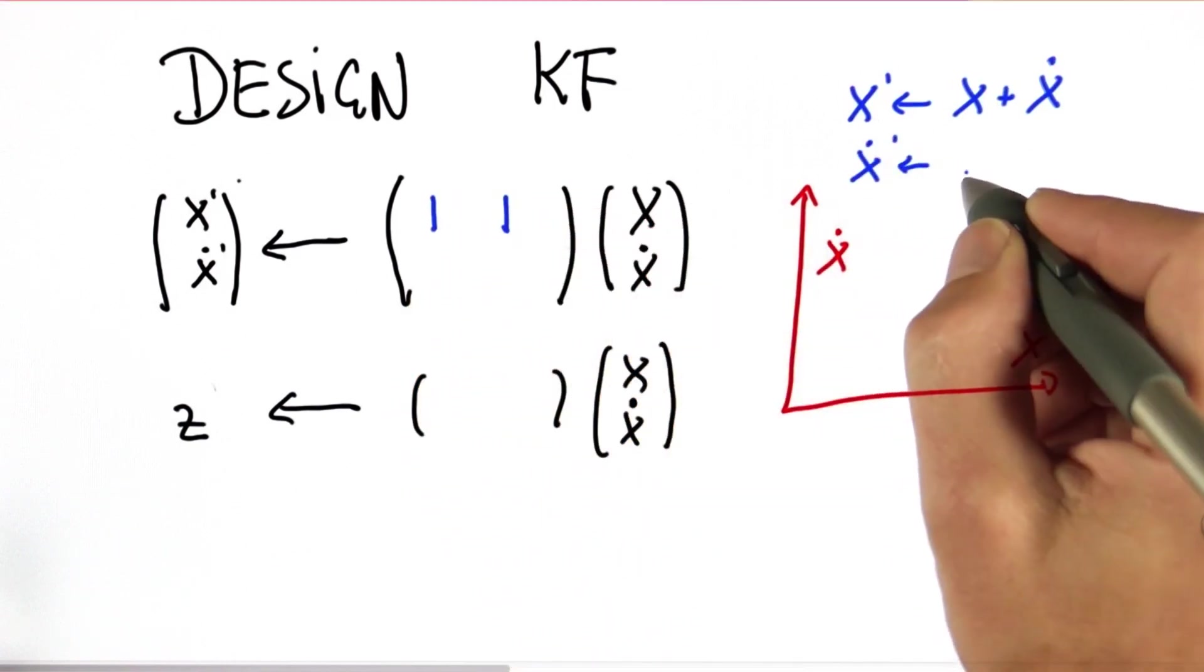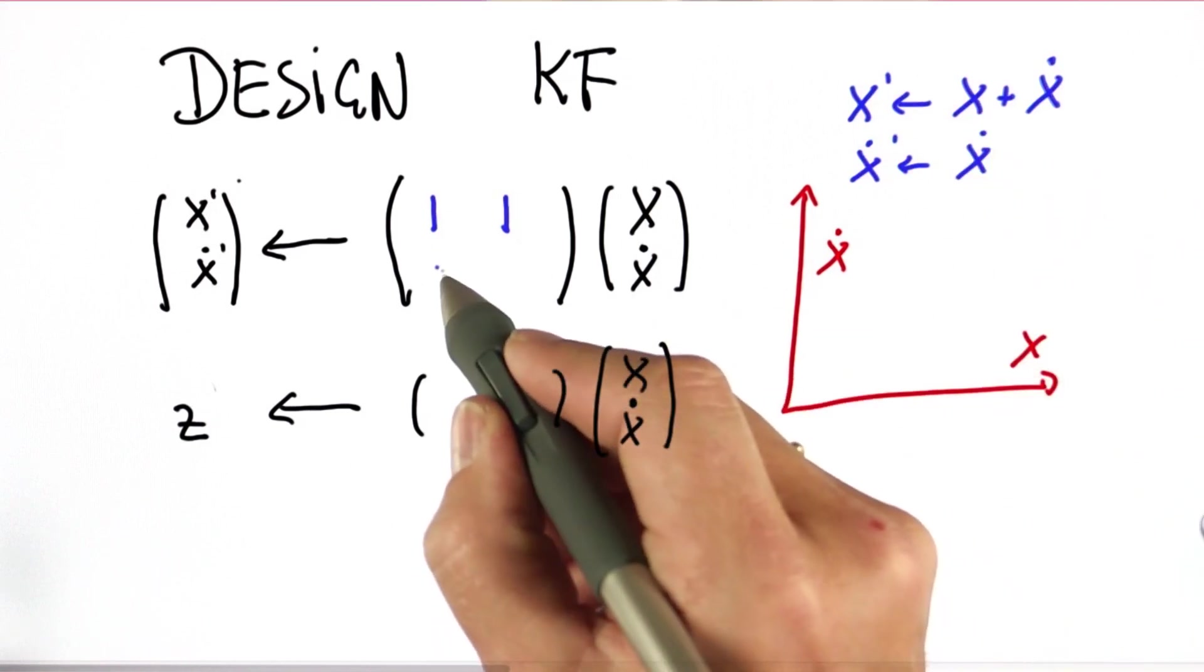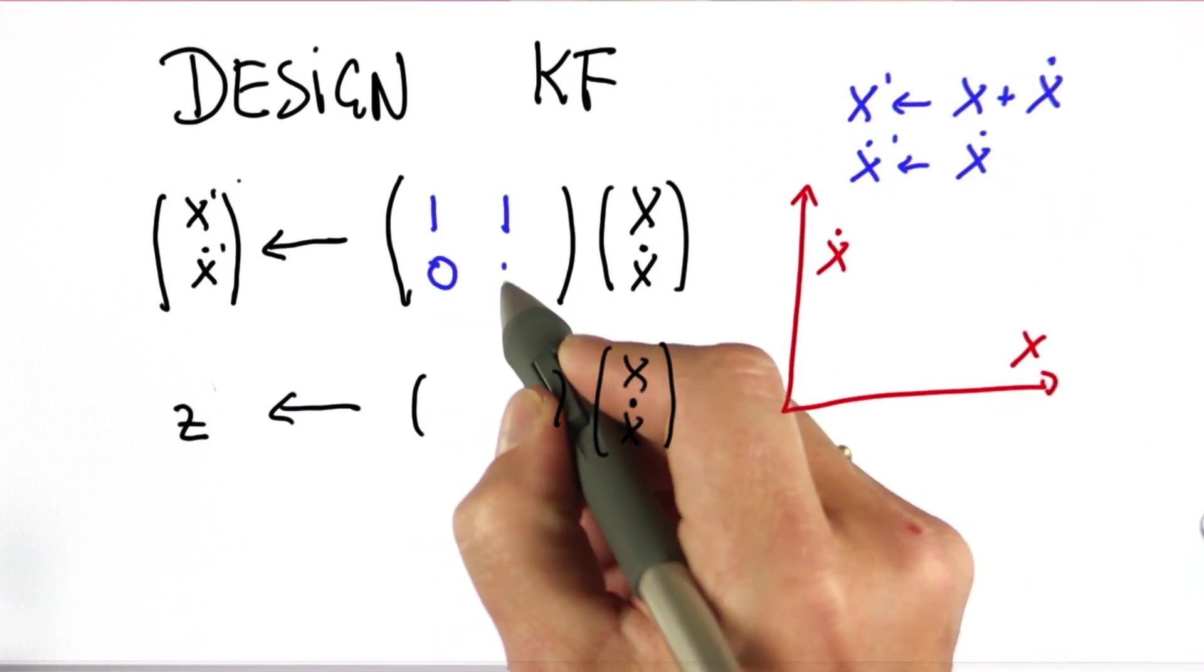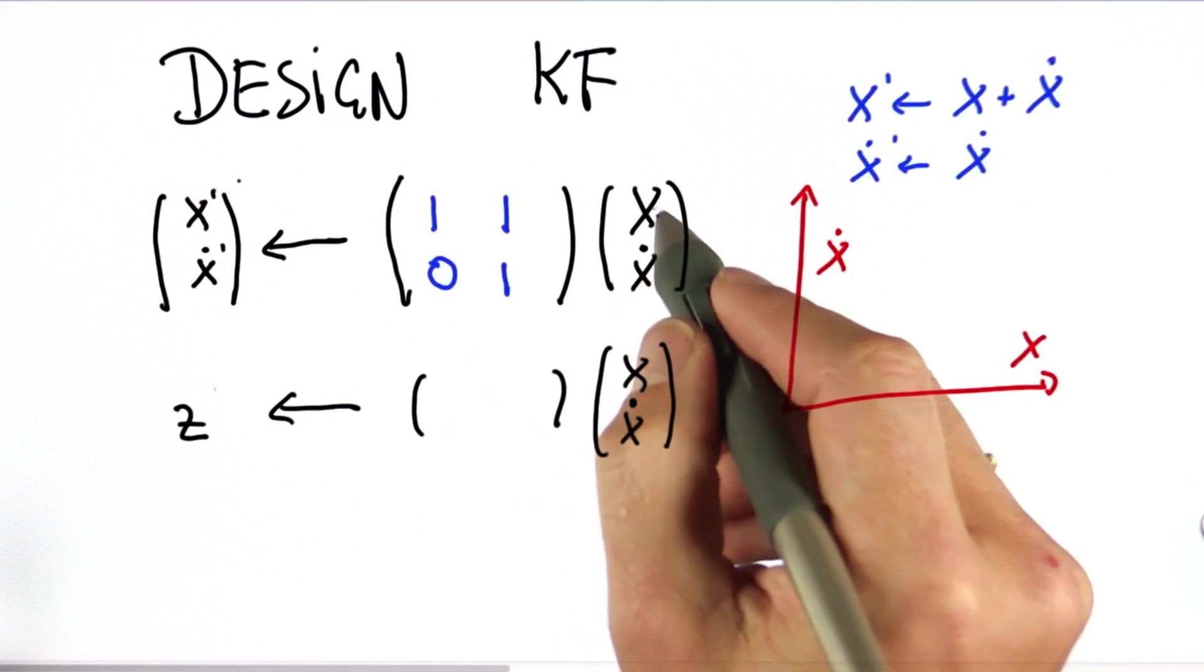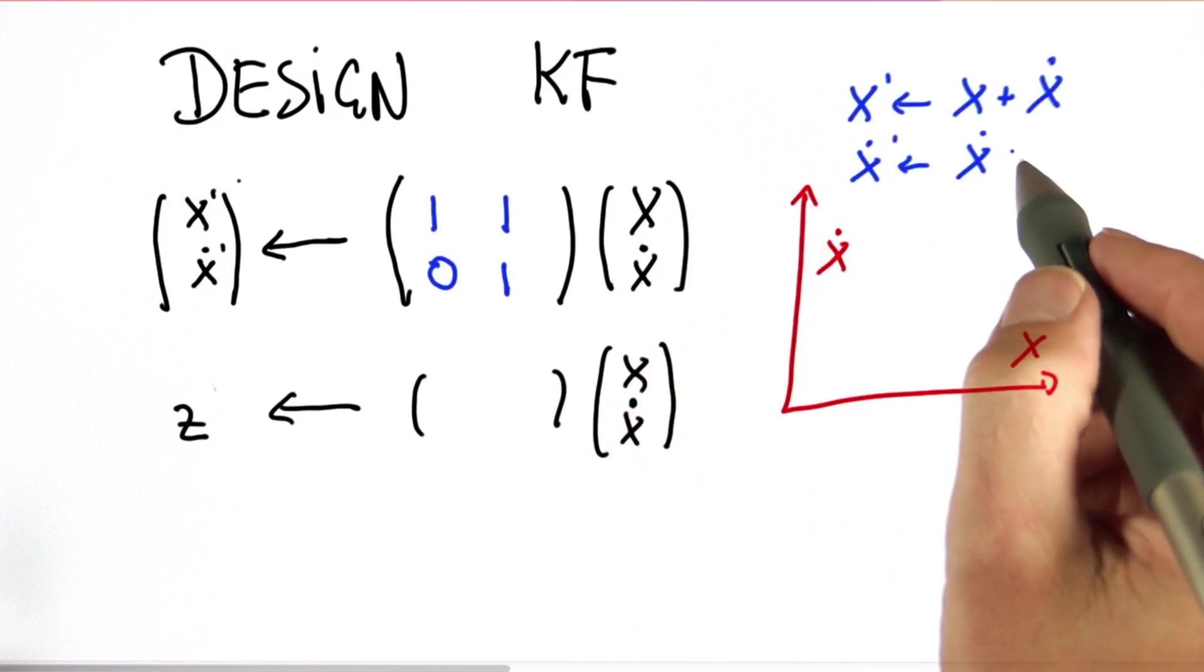The new velocity should just be the old velocity, which gives a 0 over here and a 1 over here. If you multiply this matrix with this vector, this is exactly what you're getting.